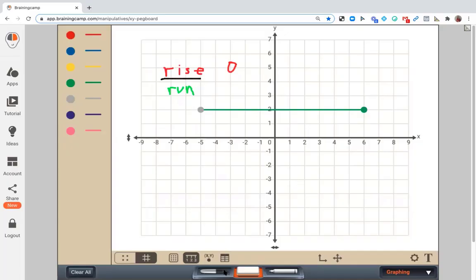Well, if we divide these two quantities, I know that if I take zero and divide it by any quantity, I'm still going to get zero. So that explains why a horizontal line has a slope of zero.